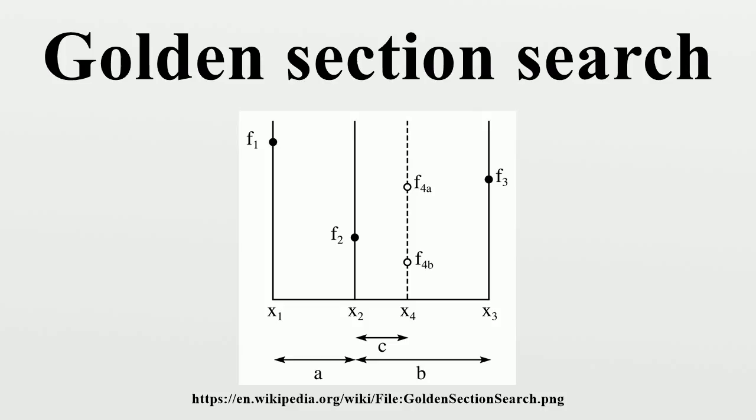The golden section search chooses the spacing between these points in such a way that these points have the same proportion of spacing as the subsequent triple. By maintaining the same proportion of spacing throughout the algorithm, we avoid a situation in which x4 is very close to x2 or x3, and guarantee that the interval width shrinks by the same constant proportion in each step.